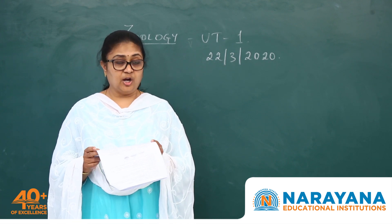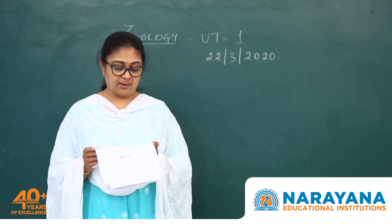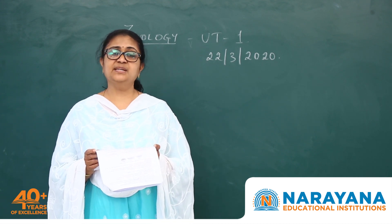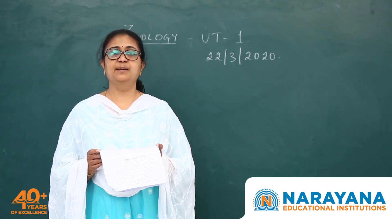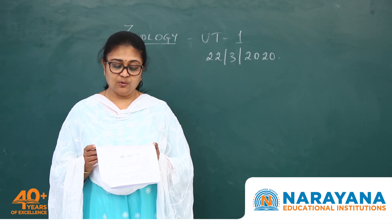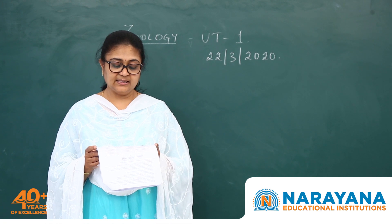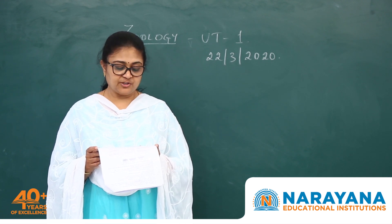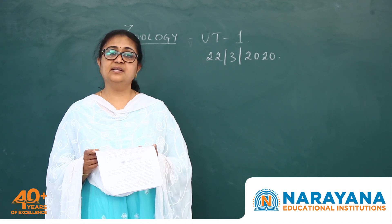Question 145: which best describes resource partitioning? Option 1 — slight variations in niche that allow similar species to coexist — is correct, because no two species can occupy the same niche, but they can share food resources if not limited. Option 2 — a climax community reached when no new niches are available — is not related. Option 3 — competitive exclusion resulting in success of a superior species — is not related to resource partitioning as it clearly states competition. Option 4 — two species co-evolving to share identical niches — is wrong because they can never share the same niche.